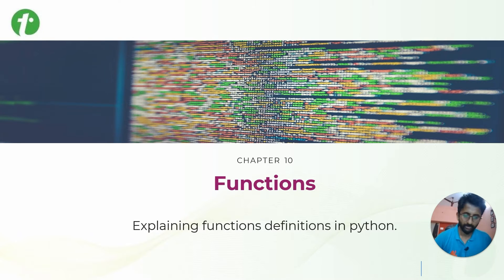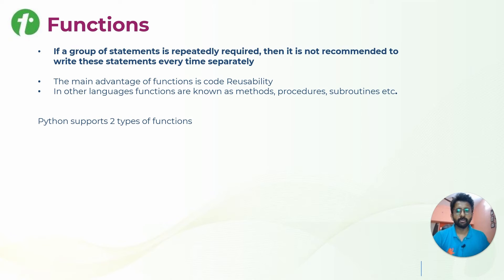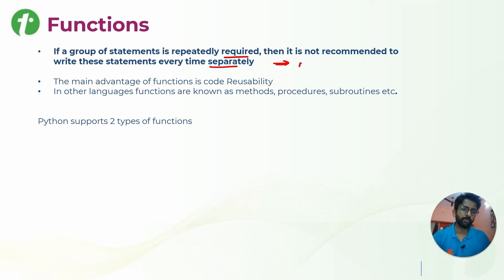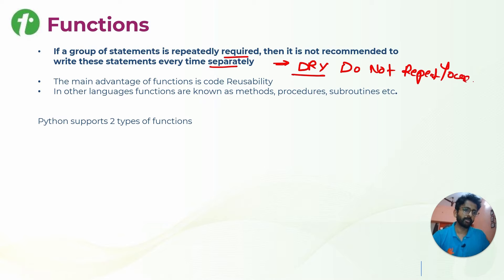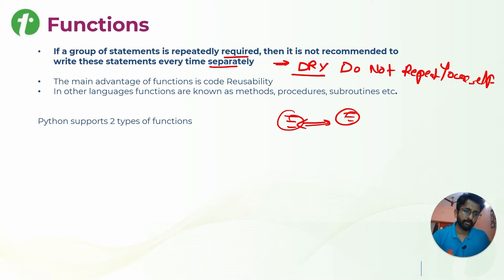Welcome to the chapter on functions. Whenever you want to write a group of statements that are repeatedly required in your code, it is not recommended to write them separately every time. We follow the DRY principle — Do Not Repeat Yourself. Whenever a few lines are repeated multiple times in your code, the standard practice is to create a function and call it. The main advantage is code reusability.